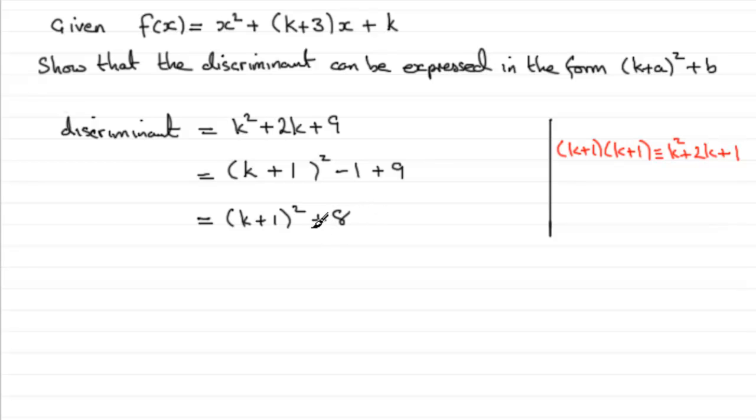And if we have got to give the values of A and B, then what I would suggest we do is we say that this is identical to K plus A all squared plus B.